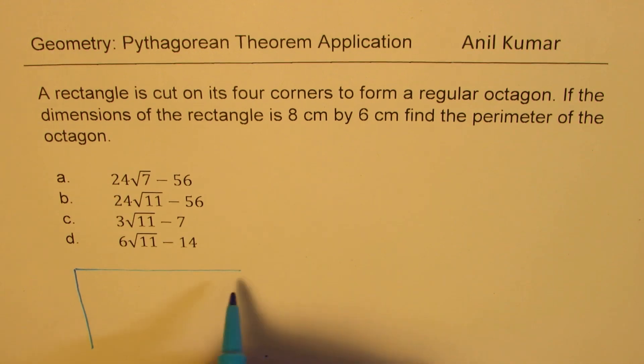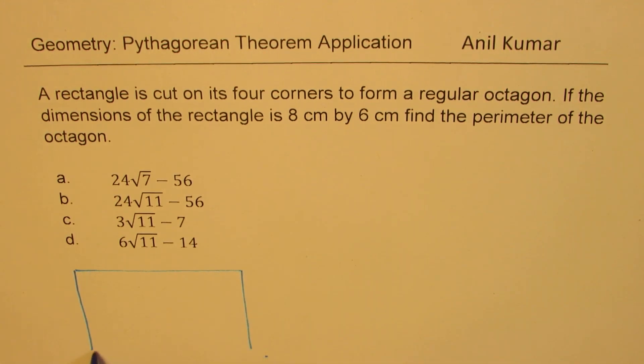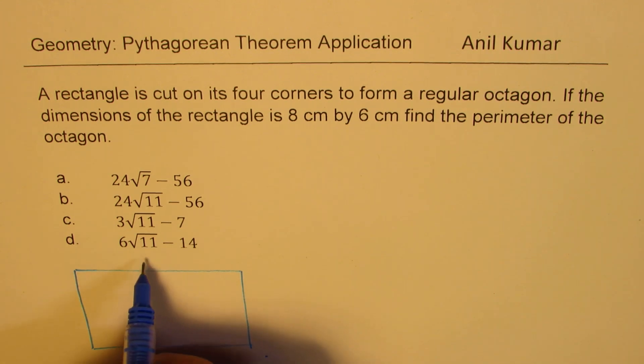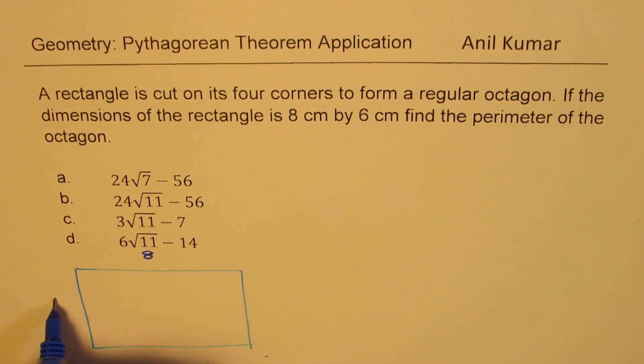So let's make a sketch of a rectangle. Let us say this is the rectangle whose dimensions are 6 by 8. So now if I cut the corners to form octagon, then it could be something like this. This will be shorter, that will be longer. So something like this, when we cut, we could form an octagon.